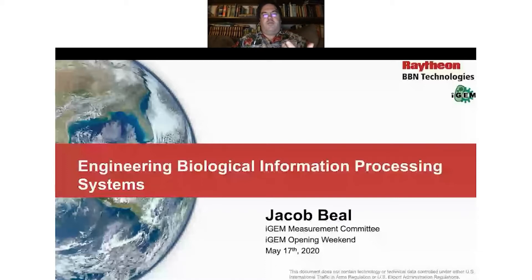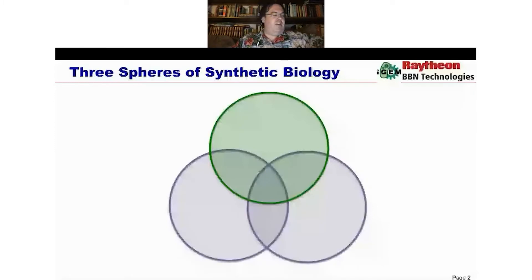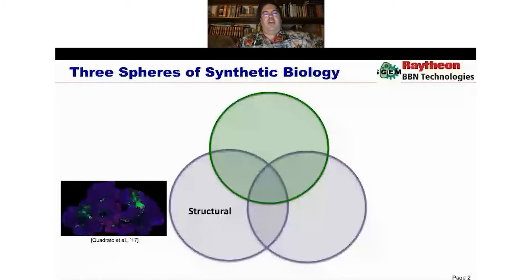So I want to start with a question of what do I even mean by a biological information processing system? And here, I find it useful often to think about synthetic biology as being divided into three general areas overlapping in this Venn diagram here. On the one hand, you have synthetic biology that's structural in focus, where we don't really care about the individual cells or chemicals, but we care about the large scale properties we can get out of their aggregates.